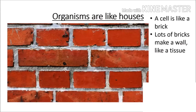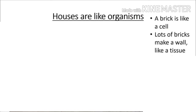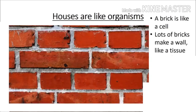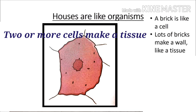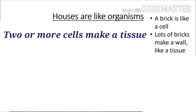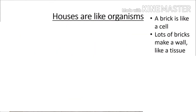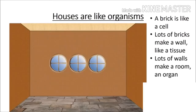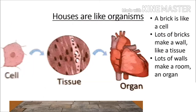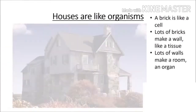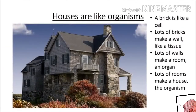Lots of bricks make a wall, like a tissue. From this we understand that cells in our body are like bricks in a wall. Lots of walls make a room, and that is like an organ. That is, a cell makes a tissue, and tissue makes an organ. Then, lots of rooms make a house — that is, the organism.